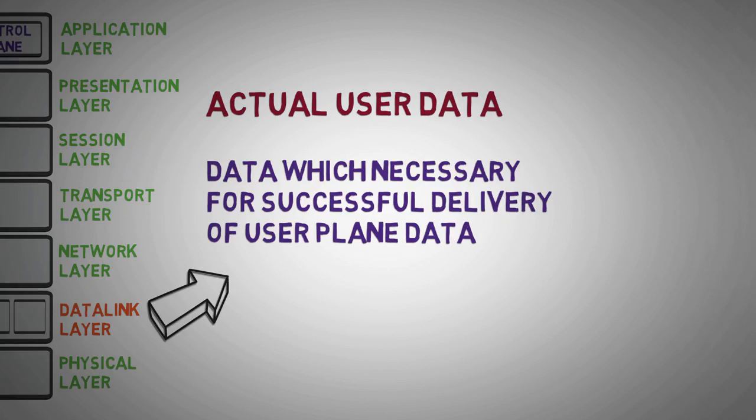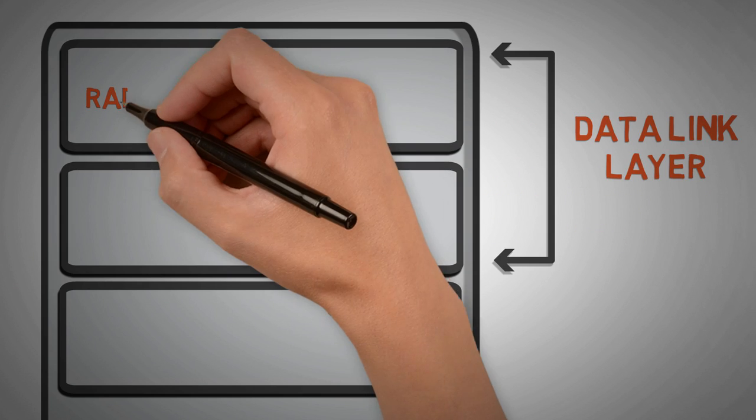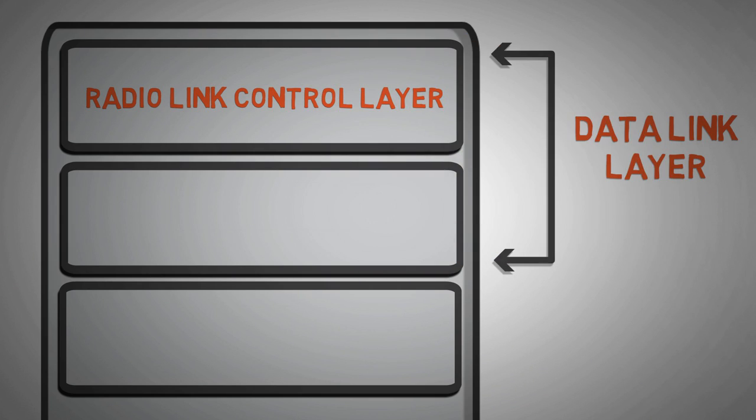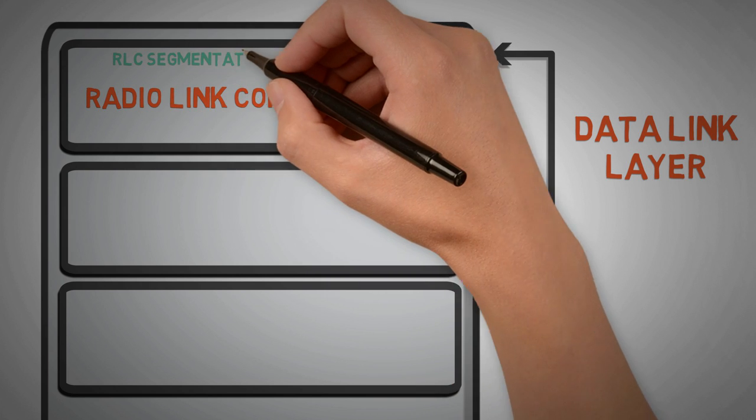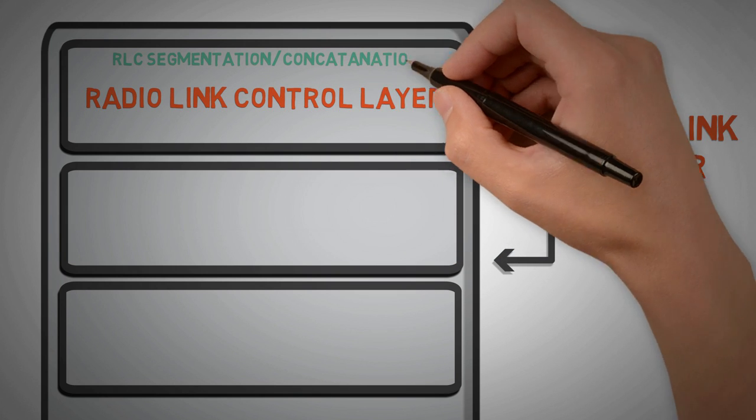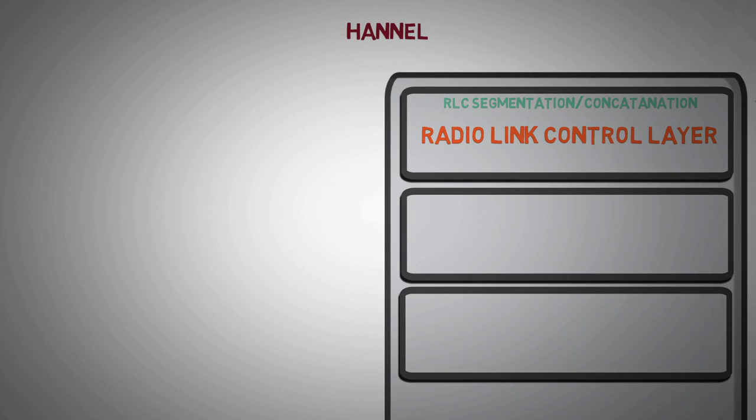Here in LTE protocol stack, radio link control layer performs this logical categorization and the process is known as RLC segmentation or concatenation. So, there are 5 logical channels for control plane traffic.